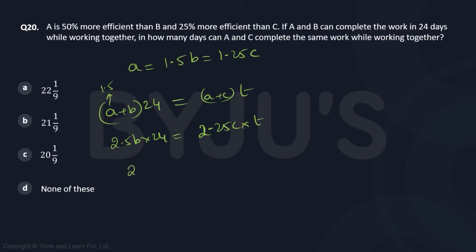So, I have 2.5 into 24 by 2.25 equal to C by B into t. Now, what is C by B? I can get that from here. C by B is equal to 1.5 by 1.25.